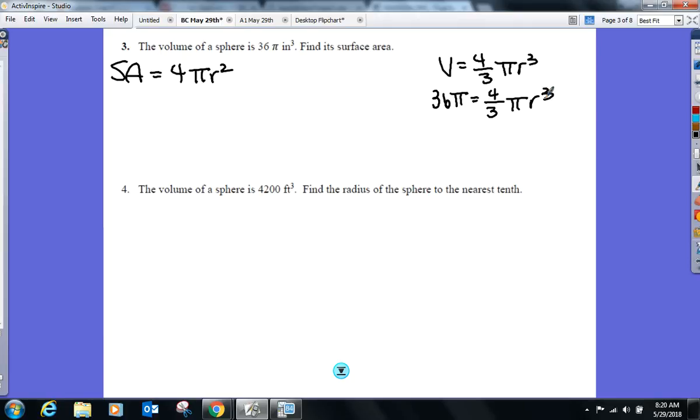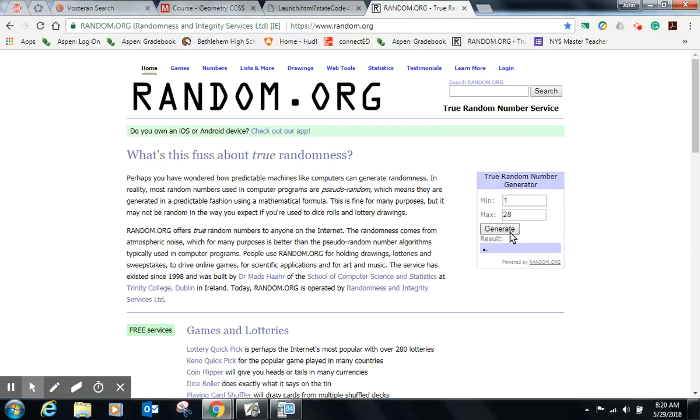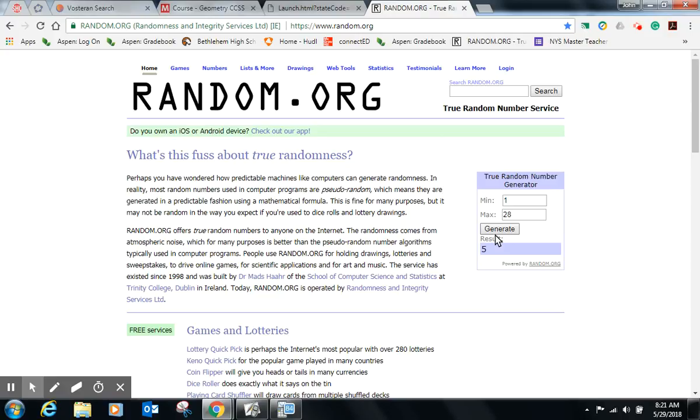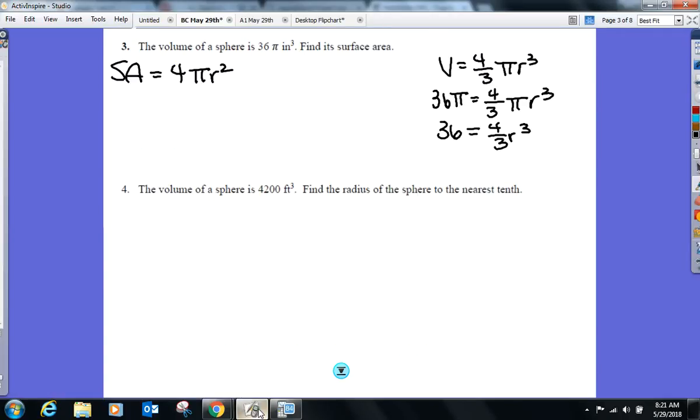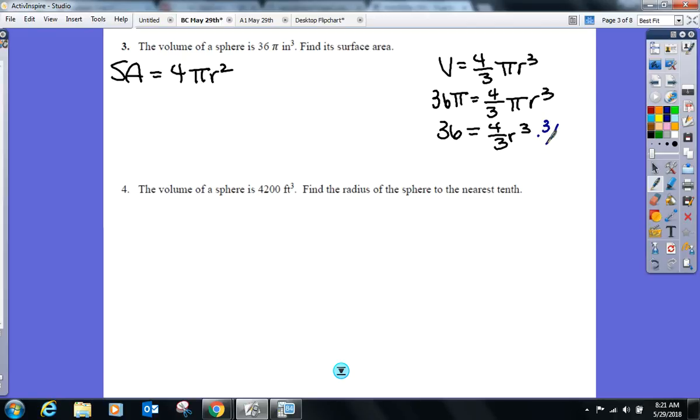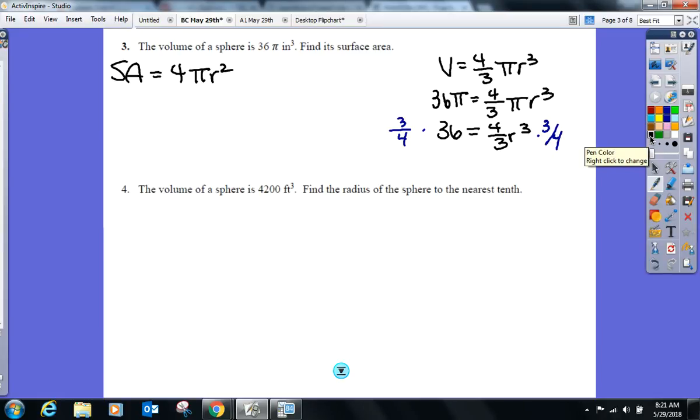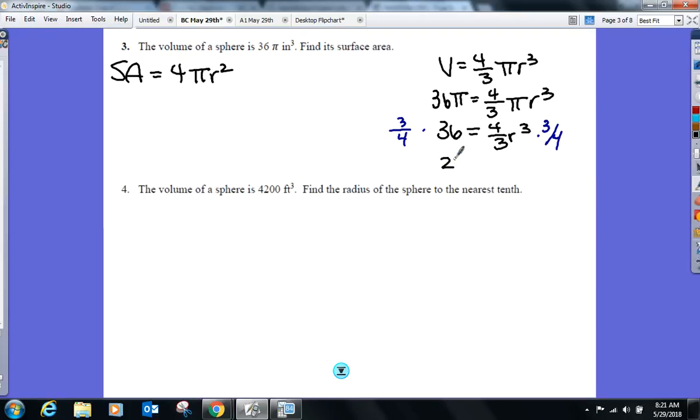There's a lot of algebra going on. One step at a time. What's on both sides here? We can just cancel out now. Pi. So I'm just going to cancel them out now. 36 equals 4 thirds r cubed. There's going to be a new button on the calculator in a second. How do you want to get rid of that 4 thirds? I'll multiply both sides by 3 over 4. 3 fourths times 36. We end up with 27 equals r cubed.